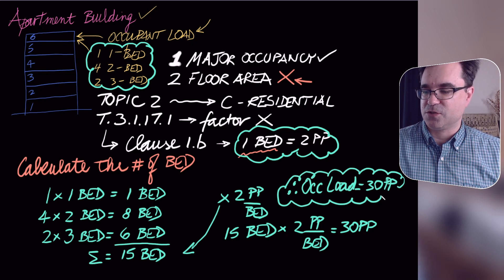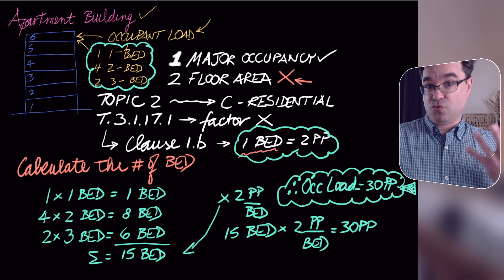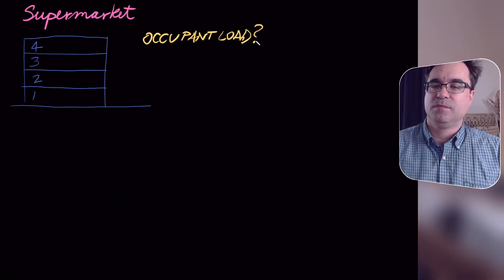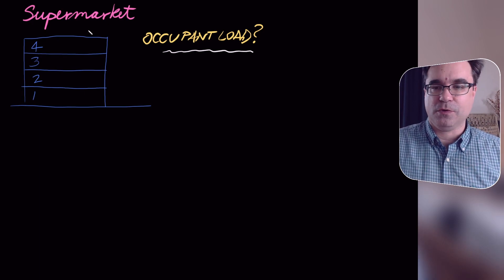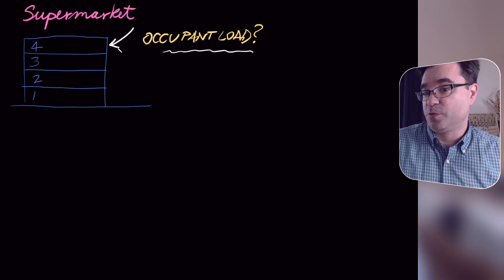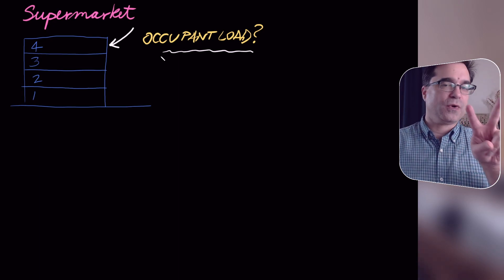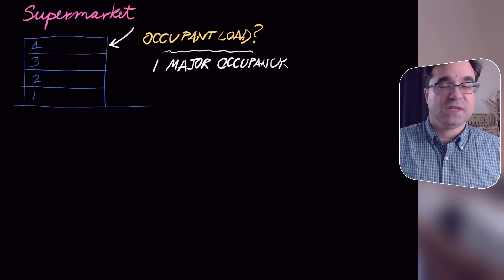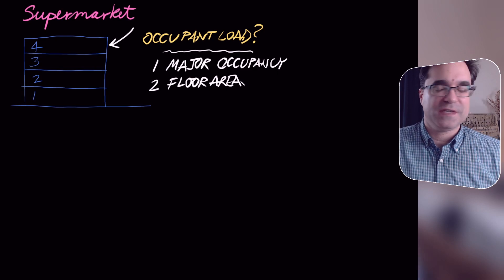Therefore the occupant load is 30 people, and I make my final answer obvious and unmistakable. In the next example, we'll determine the occupant load — the number of people expected — on the fourth story of a supermarket building. The two ingredients are again: major occupancy and floor area.